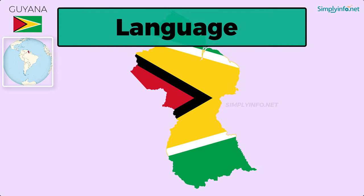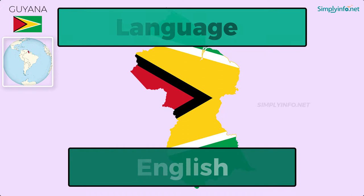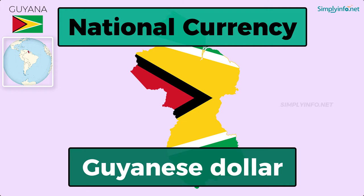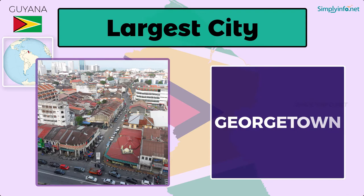National Currency: Guyanese Dollar. Largest City: Georgetown. Continent: America.